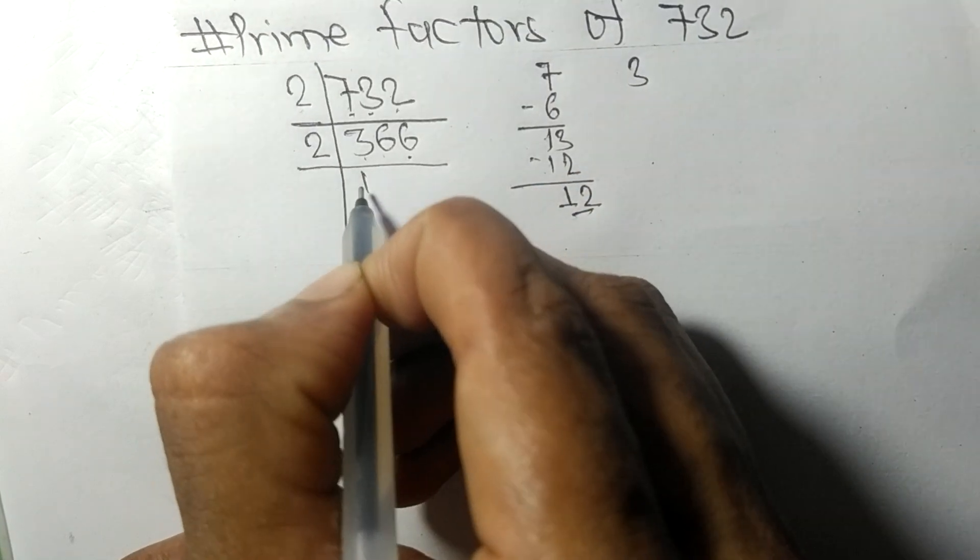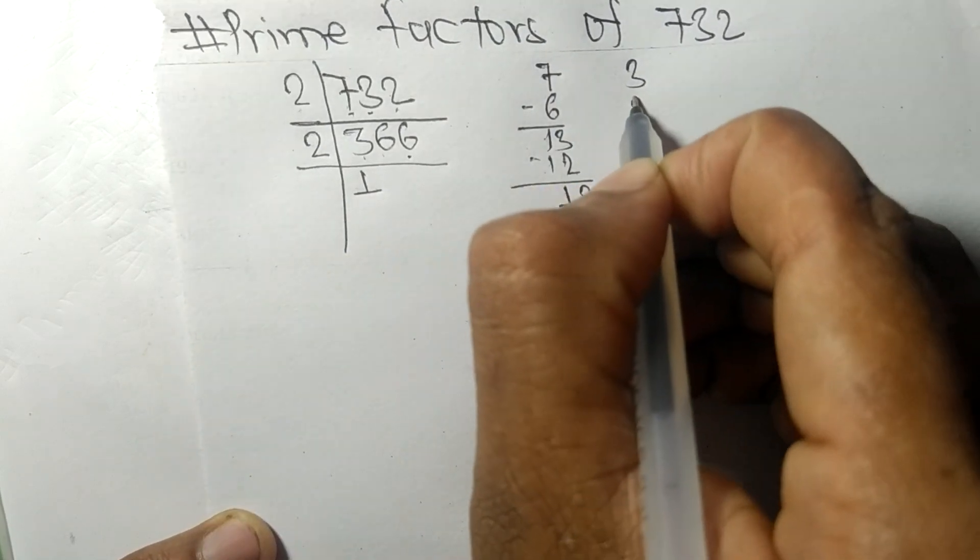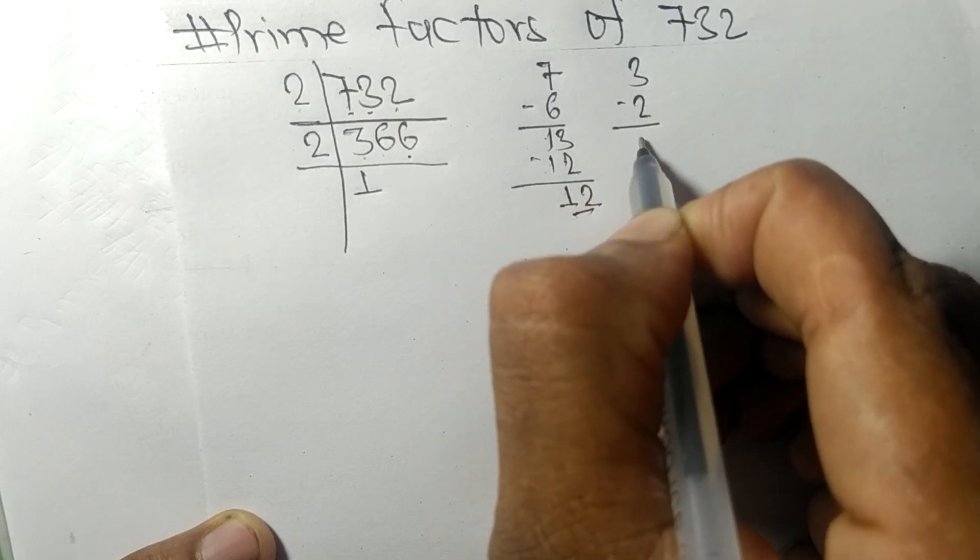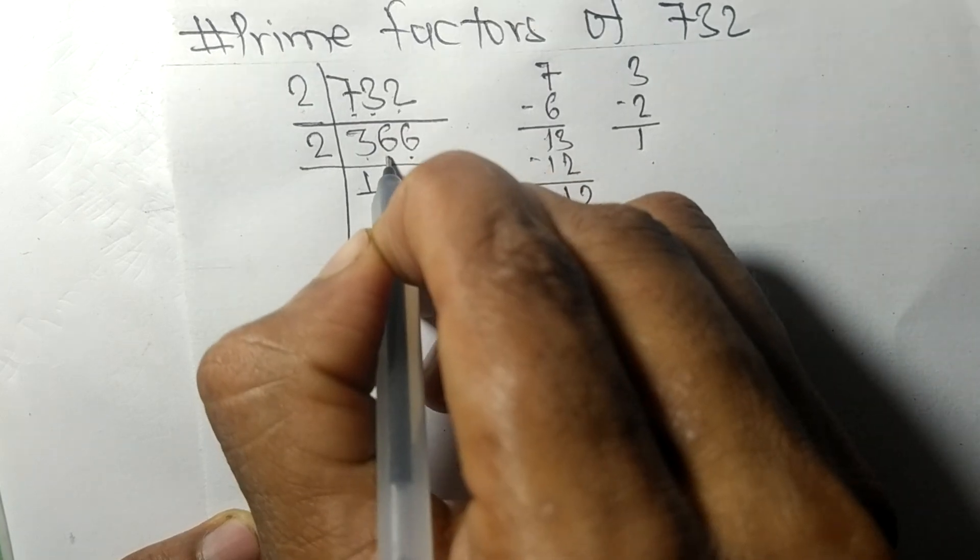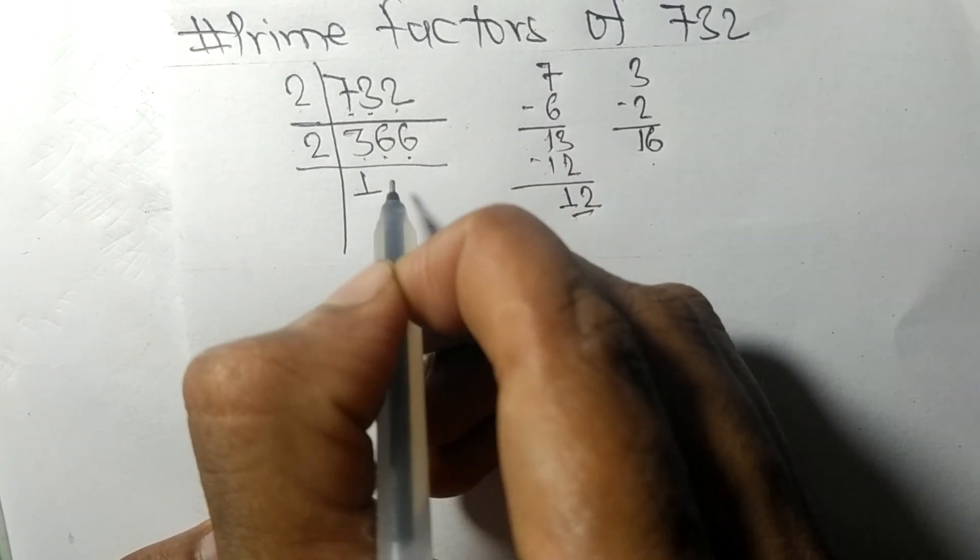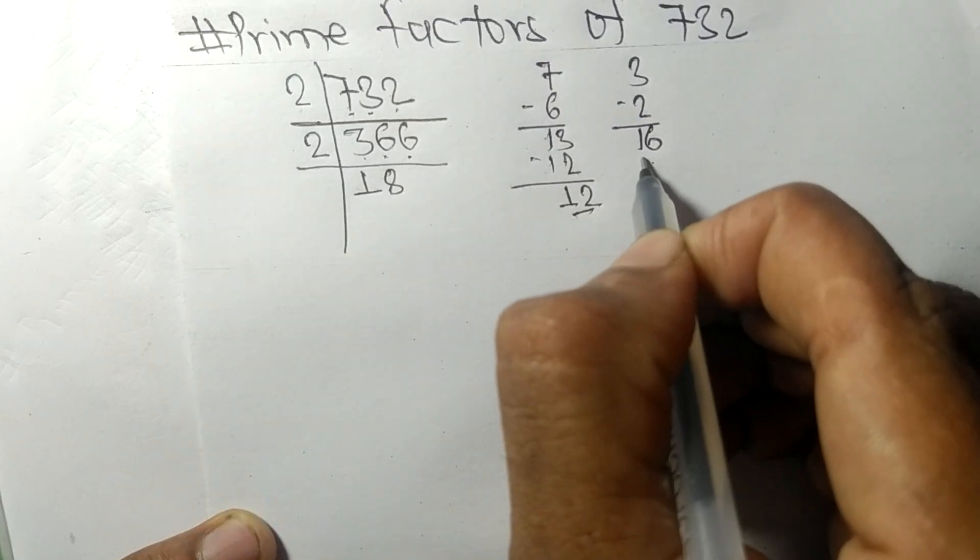Two times 1 means 2, remainder 1. And this 6 becomes 16. Two times 8 means 16, and two times 3 means 6.